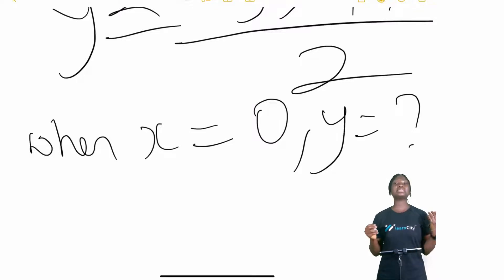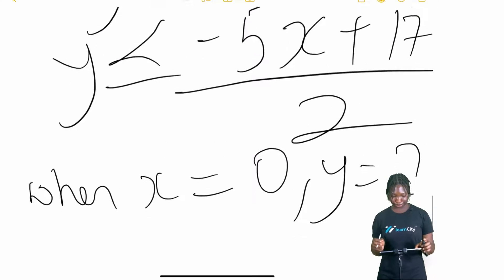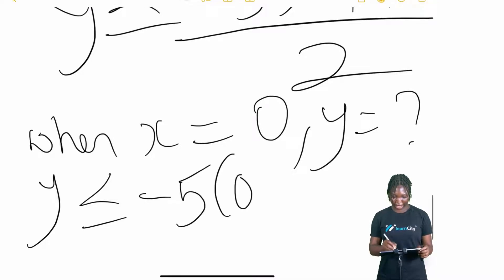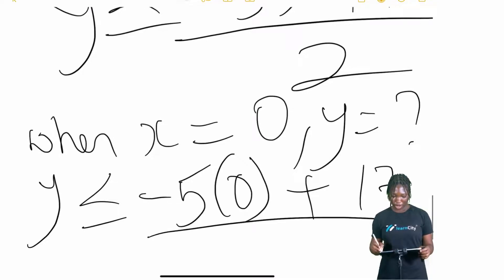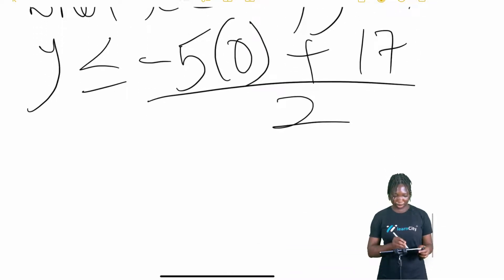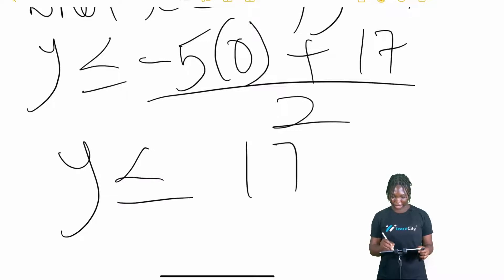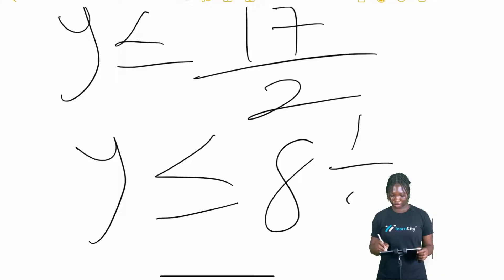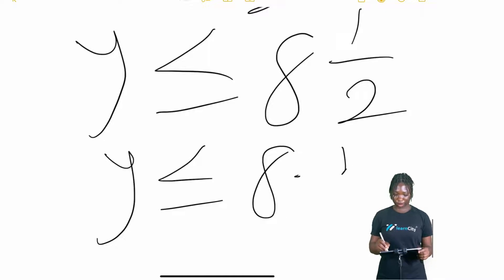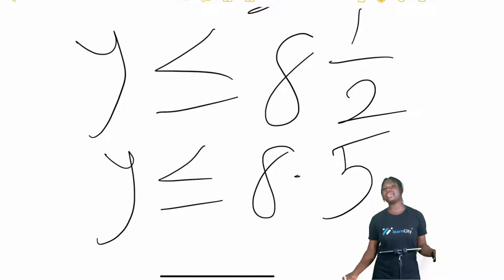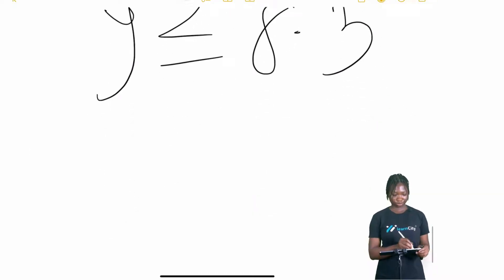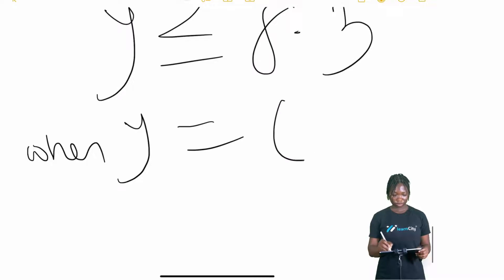With y expressed as (minus 5x plus 17) over 2, when x is 0, we have y equals 17 over 2, which is 8.5. So our y-intercept is 8.5.